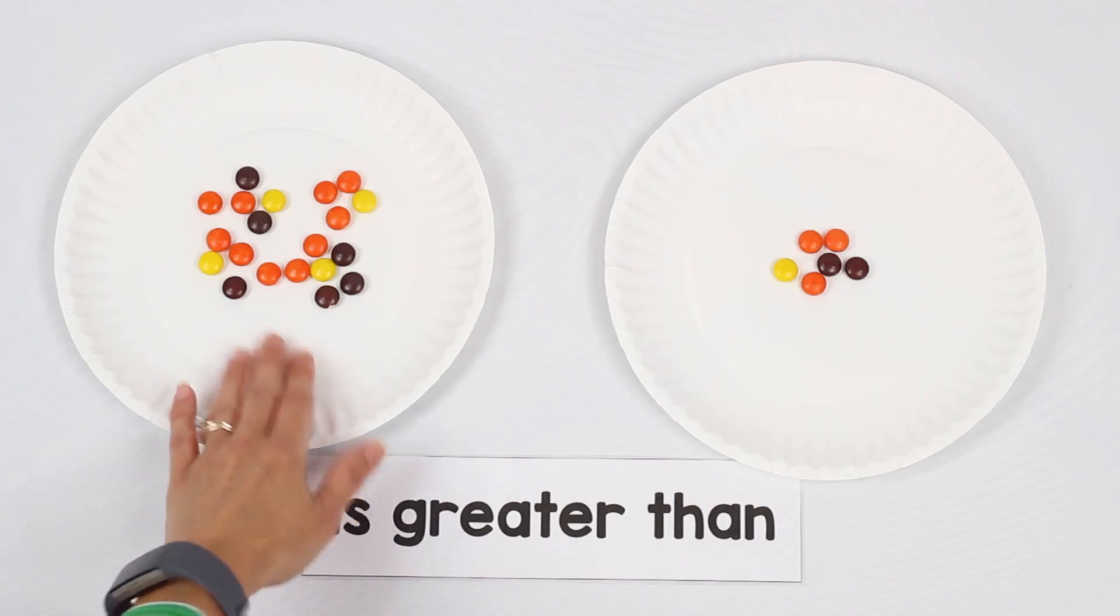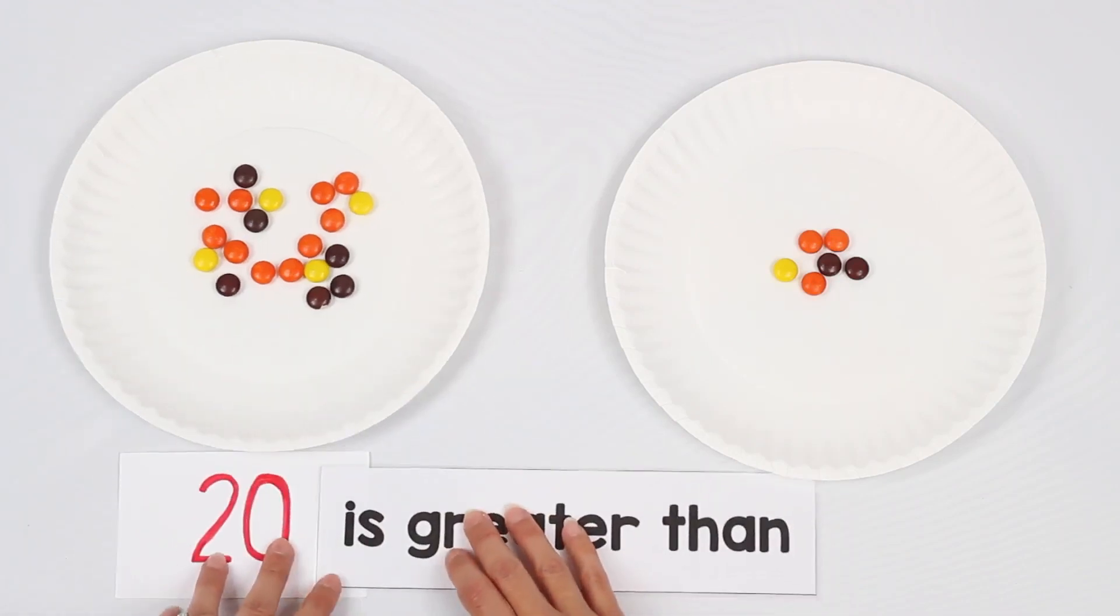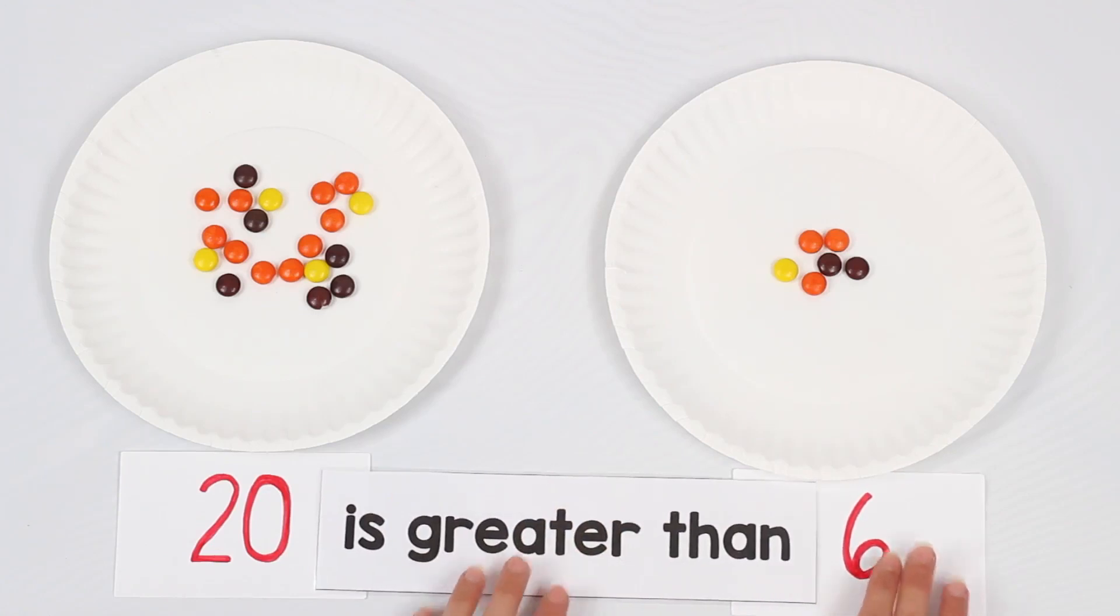When we count the candy pieces on the left, we find that there are 20 pieces of candy. And when we count them out on the right, we see that there are only six pieces of candy on the right. And we do know that the number 20 is greater than the number six. So practice reading that comparison together. 20 is greater than six.